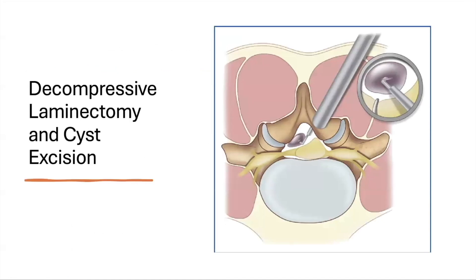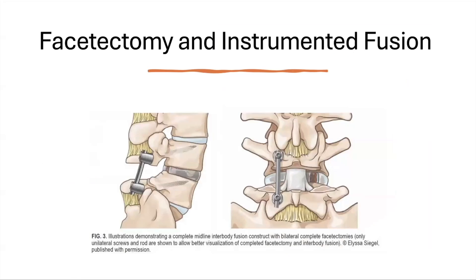The operative technique comes in interlaminally from the contralateral side — an approach crossing the midline — creating a decent angle at which to dissect the thecal sac from the cyst itself and expose the facet joint thereafter. The final construct shows facetectomies completed with posterior instrumentation placed on both sides.